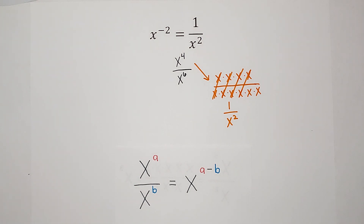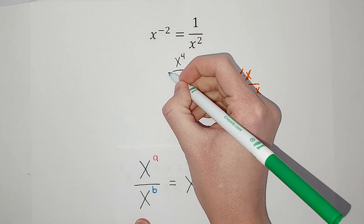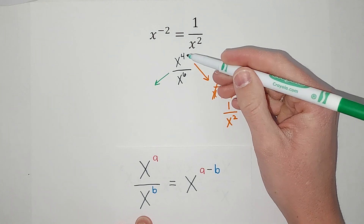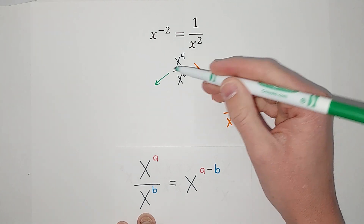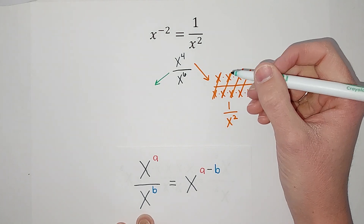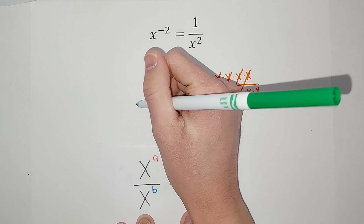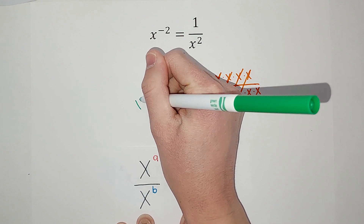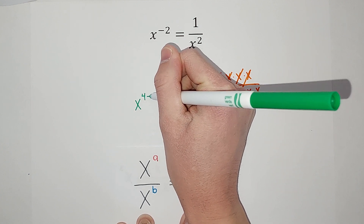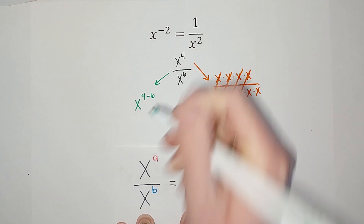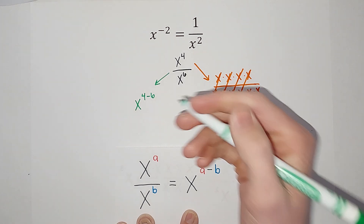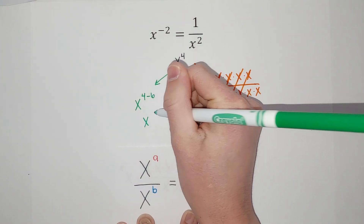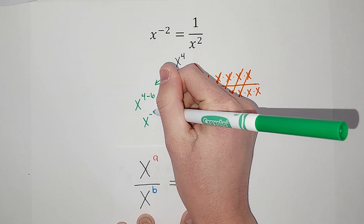So there's one way to think of it. Another way to think of it is our pretty little card here. If I think of it this way — x to the fourth over x to the sixth — my bases are the same, so I can just do x to the fourth minus six. And when I subtract those, I get x to the negative two power.